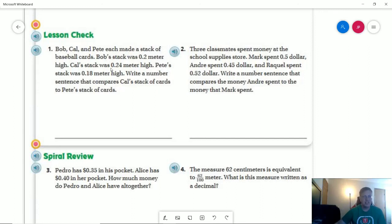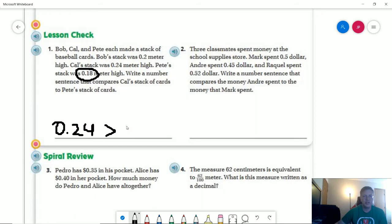Cal's is twenty-four hundredths, and I'll start with his because we're comparing Cal to Pete. Twenty-four hundredths is my starting point, and we're comparing to Pete, whose stack was eighteen hundredths. So twenty-four hundredths is greater than eighteen hundredths. That's our number sentence.